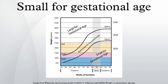Both low and high maternal serum vitamin D are associated with a higher incidence of SGA in white women, although the correlation does not seem to hold for African American women.